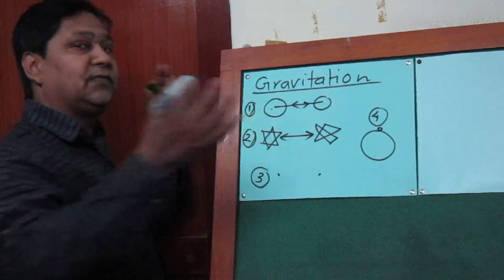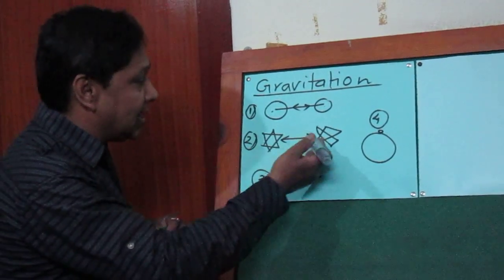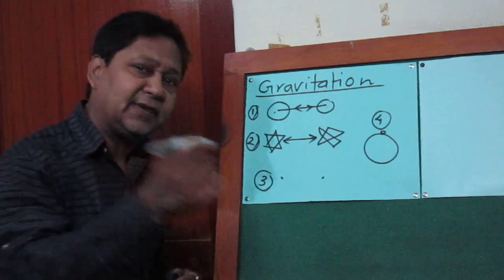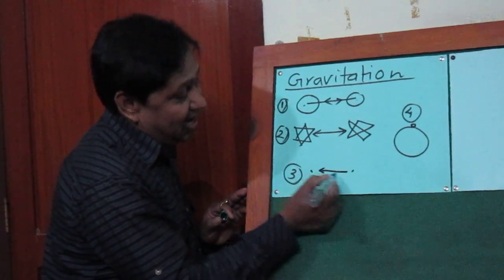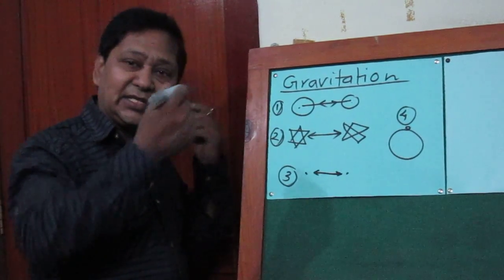Not only big heavenly bodies - whether the body is very big like a star or very small like a dust particle, they actually attract each other. No matter how big or small the body is, it doesn't make any difference.